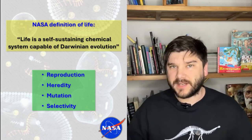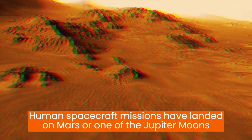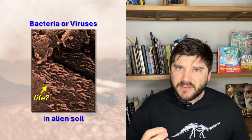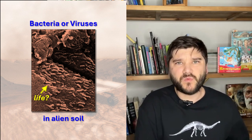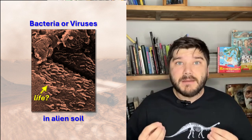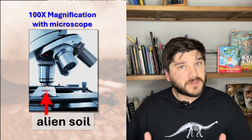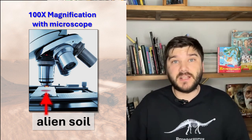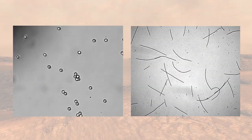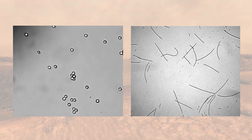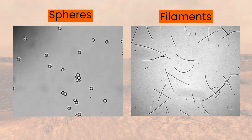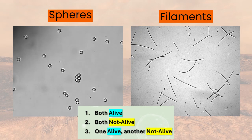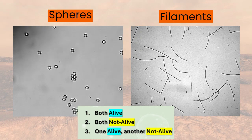Think about this definition from a different perspective. A human spacecraft mission has landed on Mars, or one of the Jupiter moons. Most probably, we will see a bare land terrain there. If there is life, it will exist in the form of tiny microbes, bacteria, or perhaps even viruses. These really small forms of life may live in the soil. The future solar system explorers will have to collect some soil samples and look at them under the microscope, magnifying it 100 times. Let's assume they were able to isolate two different kinds of particles, like the ones shown on these two movies: the spheres and the filaments. Naturally, there is a question: are these both types of particles alive? Are they both not alive? Are these just tiny pieces of random alien sand? Is one of them alive and another isn't?